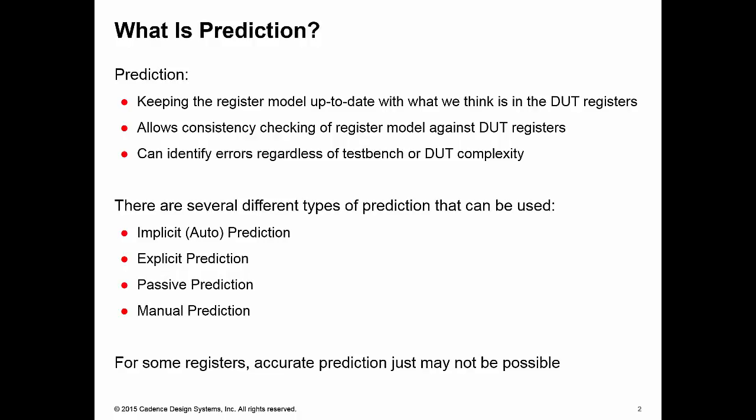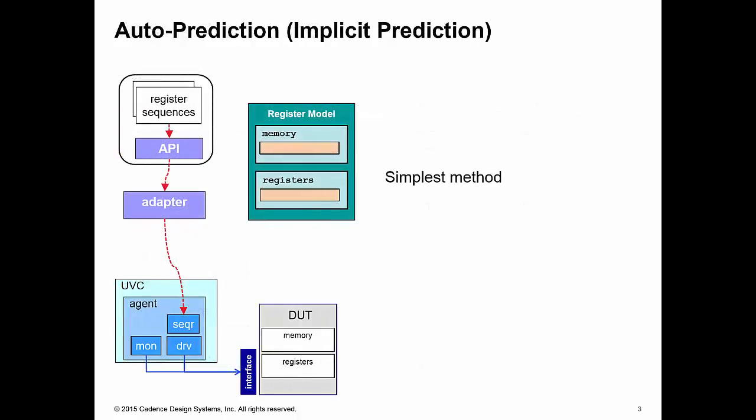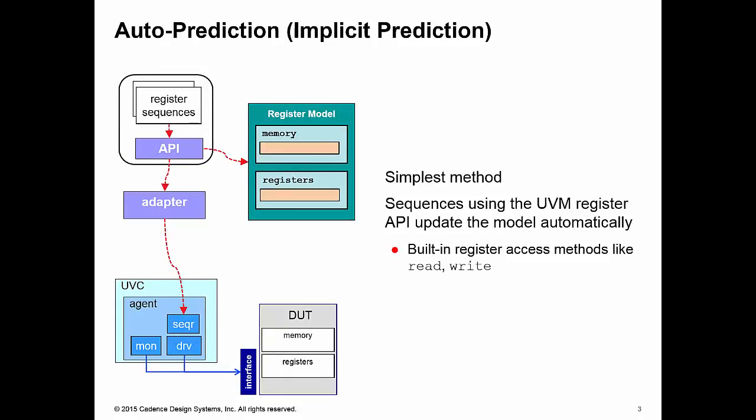Let's have a look at the first prediction mode, implicit or auto prediction mode. This is the simplest method. This relies upon the fact that if we use sequences to access our registers which use the UVM register API, by that I mean the built-in register access methods like read and write.